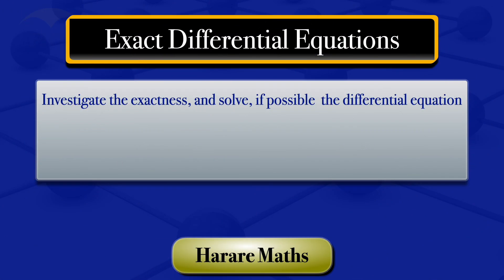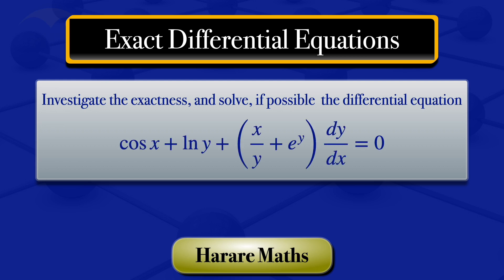In this video, I'm going to investigate the exactness of the differential equation cosine of x times ln y plus x divided by y, plus e^y multiplied by the derivative of y with respect to x, equals zero. If it is exact, I'll go on and solve that equation.